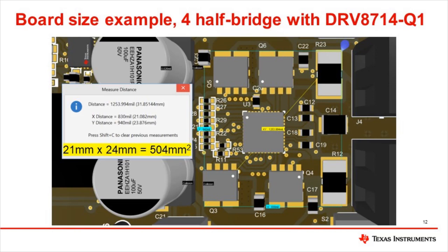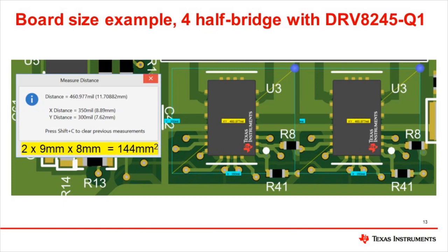The DRV8714Q1 gate driver is shown along with four dual FET packages plus two three-watt current sense resistors and all the passive components to implement a four high-current half-bridge design. This could be used to drive two independent window lift motors or three high-current seat motors with some constraint on their simultaneous motion. Here we see two DRV8245-Q1 devices next to each other with the associated passive components included. This also implements a four half-bridge design, but for typically lower currents than the gate driver design. For applications where the current matches the specification for these devices, a very compact solution is achieved.